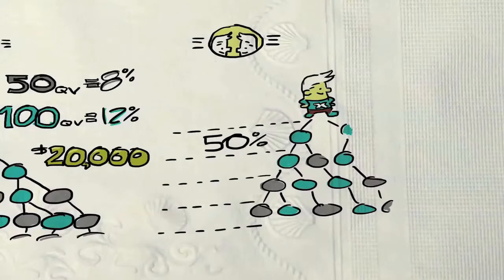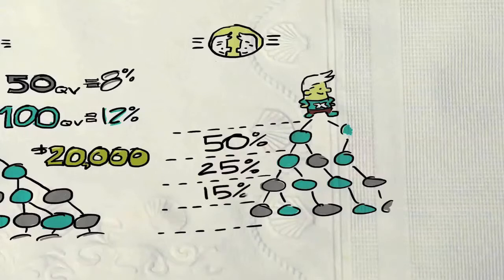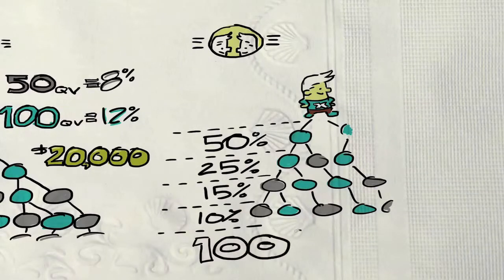But we don't stop there. According to your rank, you can earn up to 25% of the team bonuses of all the people your personally enrolled members brought into the business, and up to 15% of their personally enrolled members team bonuses, and up to 10% of your fourth level members every week. That adds up to 100% matching bonuses.